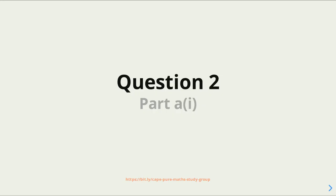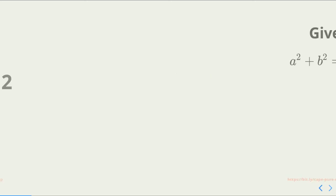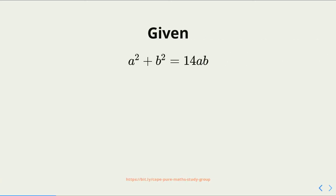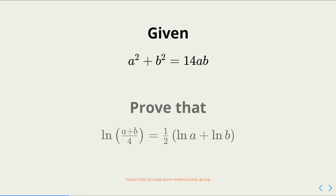Let's tackle question 2, part a1. Given that a squared plus b squared is equal to 14ab, we want to prove that the natural log of (a plus b) on 4 is equal to a half times the natural log of a plus the natural log of b.